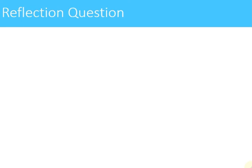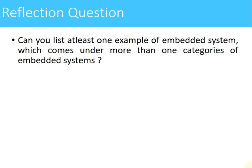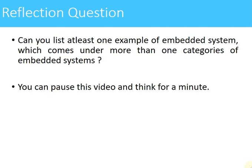Now we have seen what is an embedded system and what are the types of embedded systems. Here is a reflection question: can you list at least one example of an embedded system which comes under more than one category of embedded systems? You can pause this video, think for a minute, and try to list some embedded systems which come under more than one category.